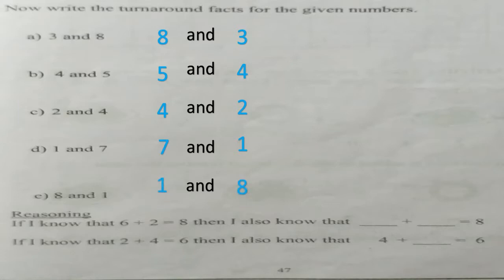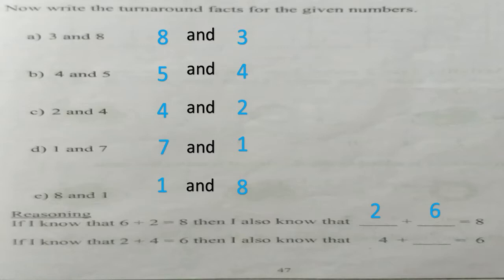Very good. Now let's answer the next two questions. If I know that six plus two is equal to eight, then I also know that dash plus dash is equal to eight. What are the numbers we have to write? It will be two plus six. For the second one — if I know that two plus four is equal to six, then four plus dash is equal to six. Which number will come there? It's going to be two.